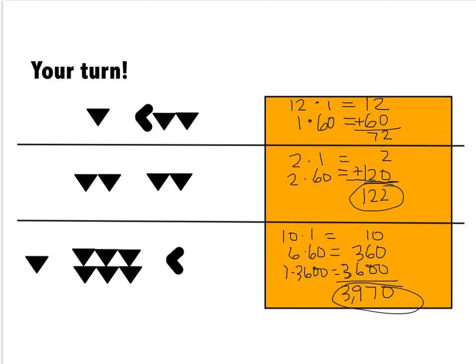All right, let's check your answers now. The first answer for the first example is 72. The second example is 122. And the third example is 3,970. You can pause the video now to look at my work if you need to check any mistakes. We'll talk about the rest of this on our lesson.